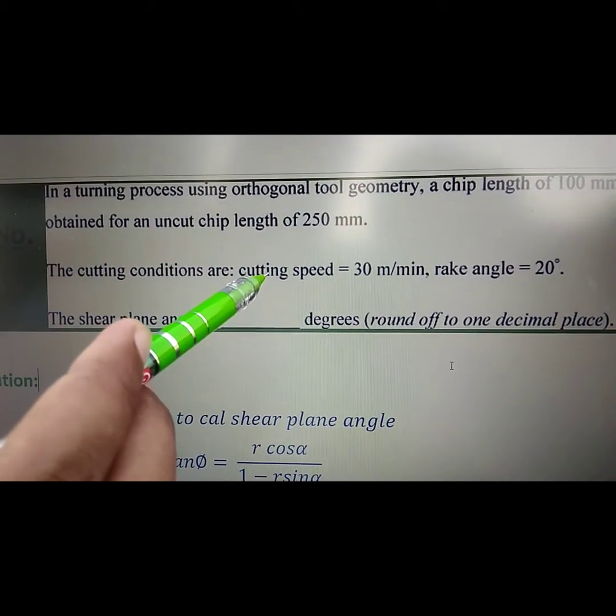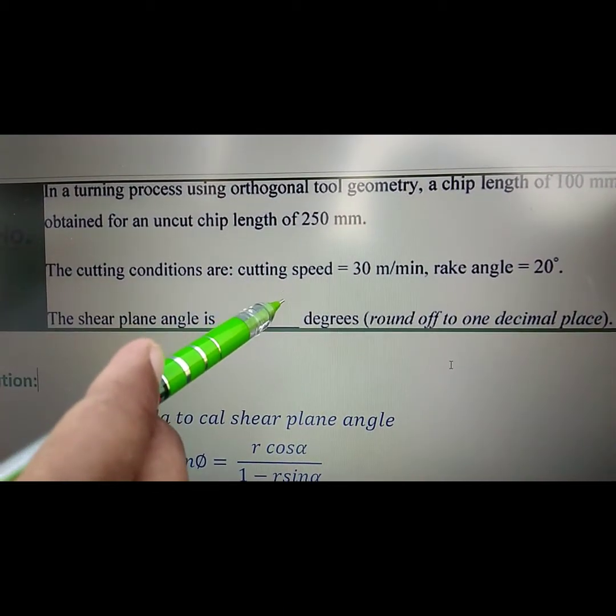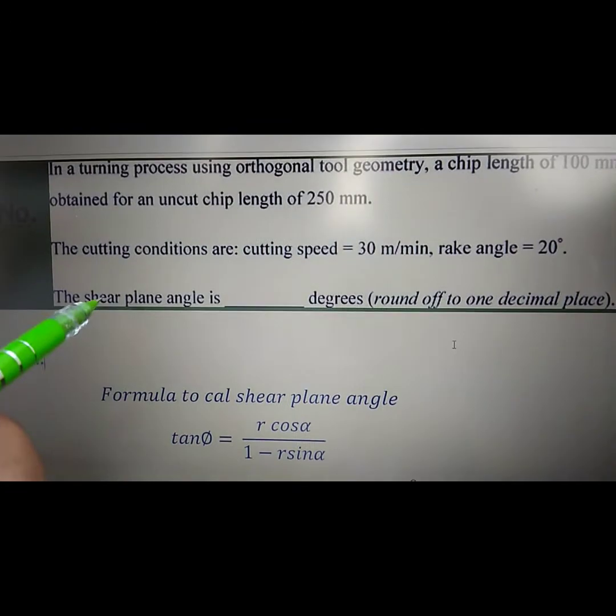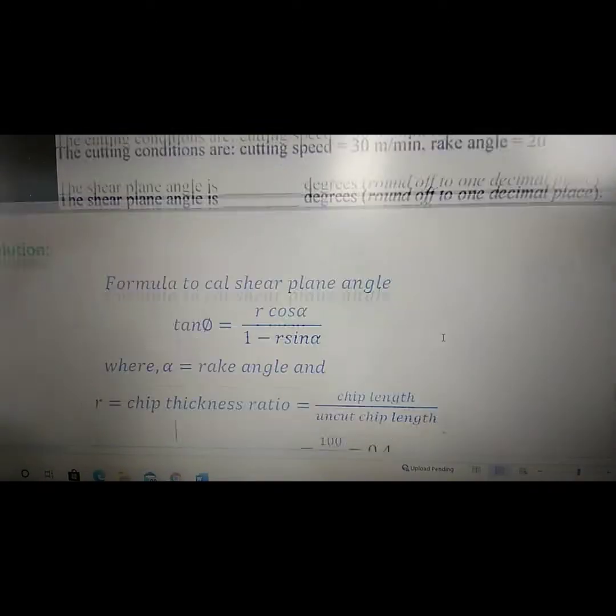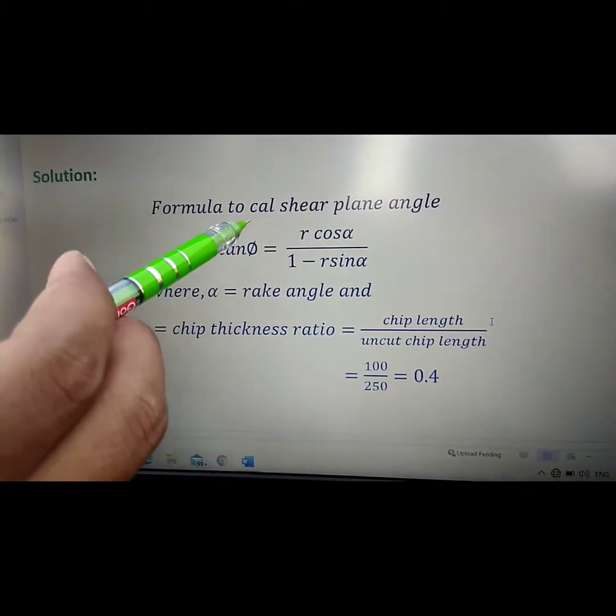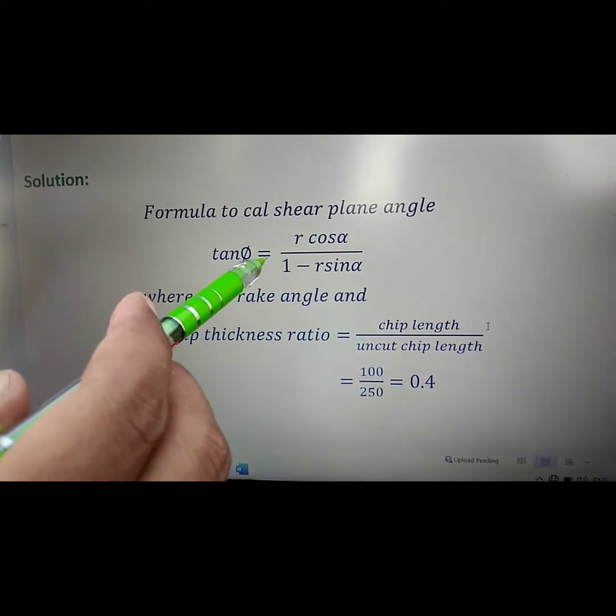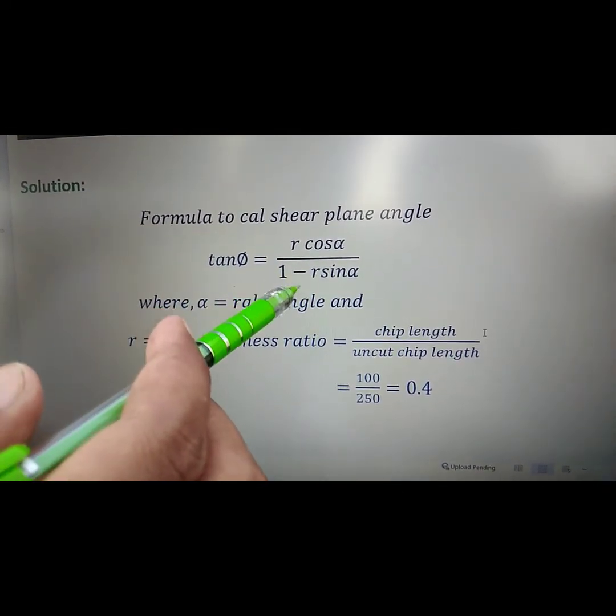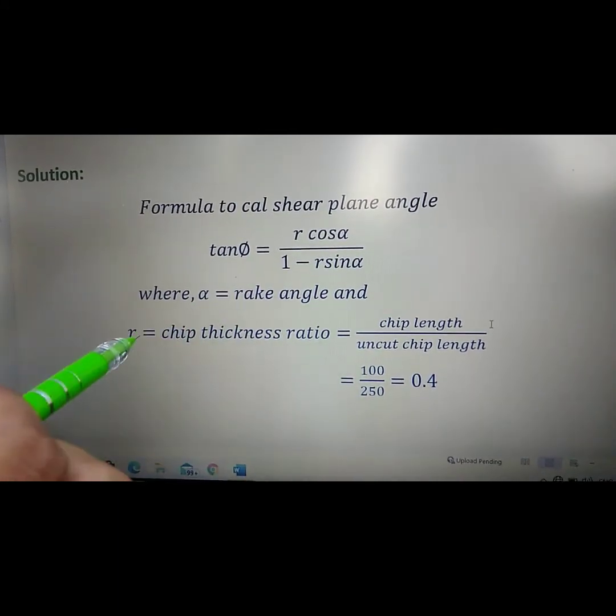The solution is as follows: The formula to calculate shear plane angle is tan φ equals r cos α over 1 minus r sin α, where α is the rake angle and r is the chip thickness ratio, which equals chip length over uncut chip length.